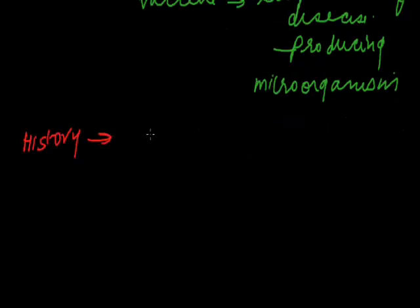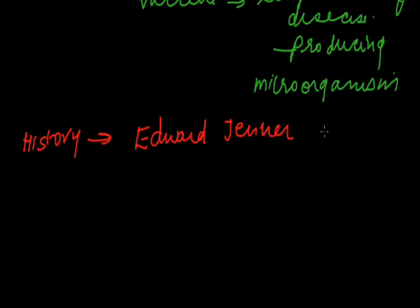Two centuries ago, an English physician named Edward Jenner realized that milkmaids who had cowpox did not catch smallpox even during epidemics. Cowpox is a very mild disease. Jenner tried deliberately giving cowpox to people and found that they were now resistant to smallpox, because the smallpox virus is closely related to the cowpox virus. Cow is 'vaca' in Latin and cowpox is 'vacca boa' — from these roots the word 'vaccination' has come into usage.